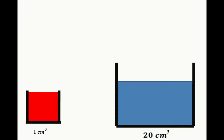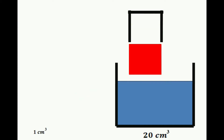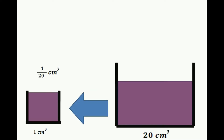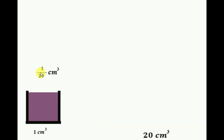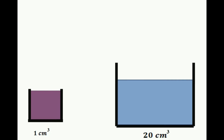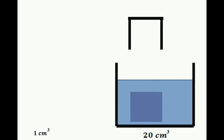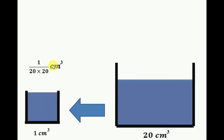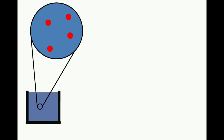We take 20 centimeter cubes of alcohol and mix the oleic acid and alcohol together. From that solution we take one centimeter cube — here the concentration of oleic acid is one part out of 20. Next, we take that solution and again mix it with 20 centimeter cubes of alcohol. From this second dilution, the concentration of oleic acid is 1/20 × 1/20, which is 1/400. So we have very few particles of oleic acid, and if spread over water it can form a very thin film.